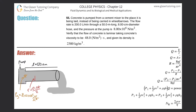Number 55. Concrete is pumped from a cement mixer to the place it is being laid instead of being carried in wheelbarrows. The flow rate is 200 liters per minute through a 50 meter long, 8 centimeter diameter hose, and the pressure at the pump is 8×10⁶ newtons per square meter. Verify that the flow of concrete is laminar, taking concrete's viscosity to be 48 N/m² and its density 2300 kg/m³.